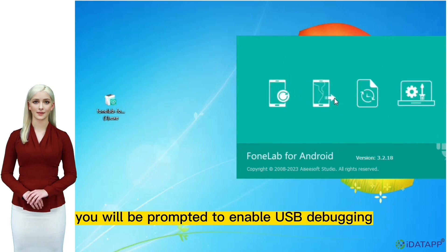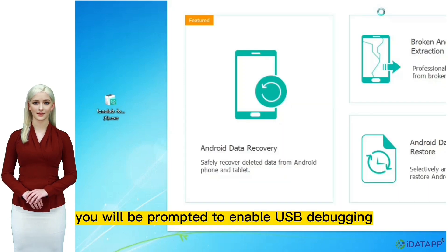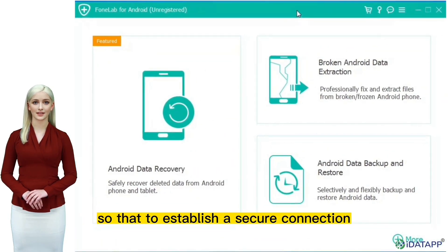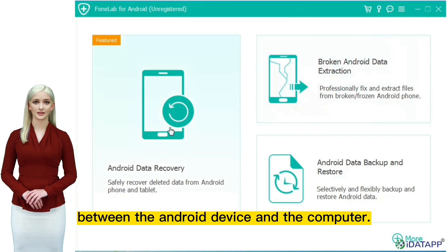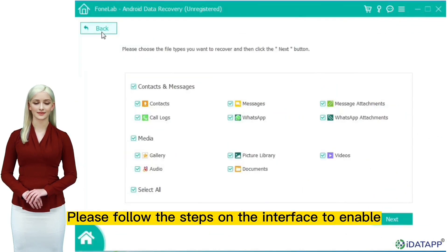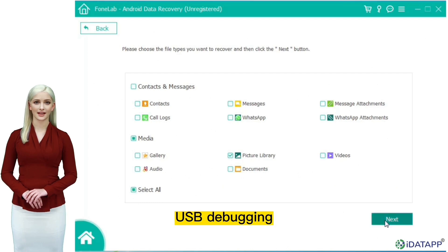You will be prompted to enable USB debugging, so as to establish a secure connection between the Android device and the computer. Please follow the steps on the interface to enable USB debugging.